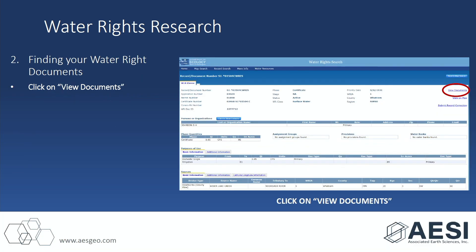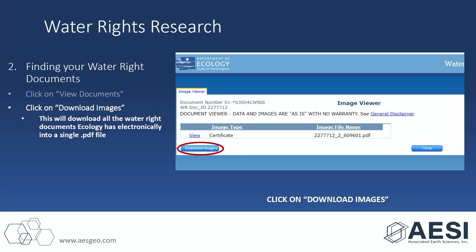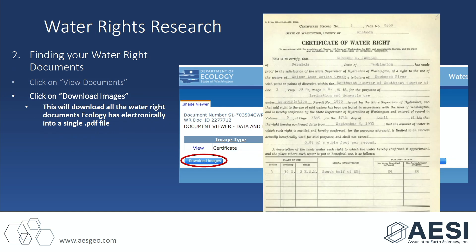If you click on it, it's free. It brings you to the general information page. What you're really looking for are the water right documents — in the far right corner you can select 'new documents.' In this example, the search pulled up the certificate. You're going to want to download those images, save them, and print them. On this certificate there's the purpose of use, the priority date, the legal description, the amount of acres included for irrigation — a lot of information.